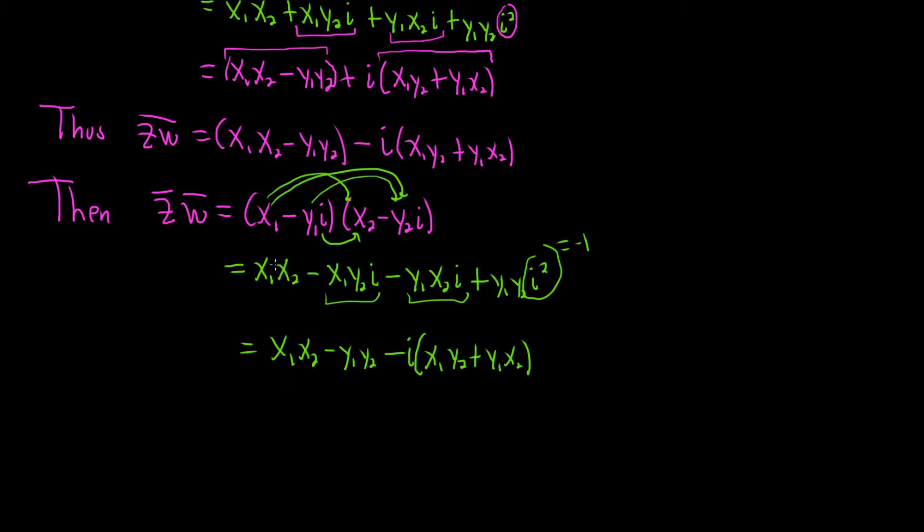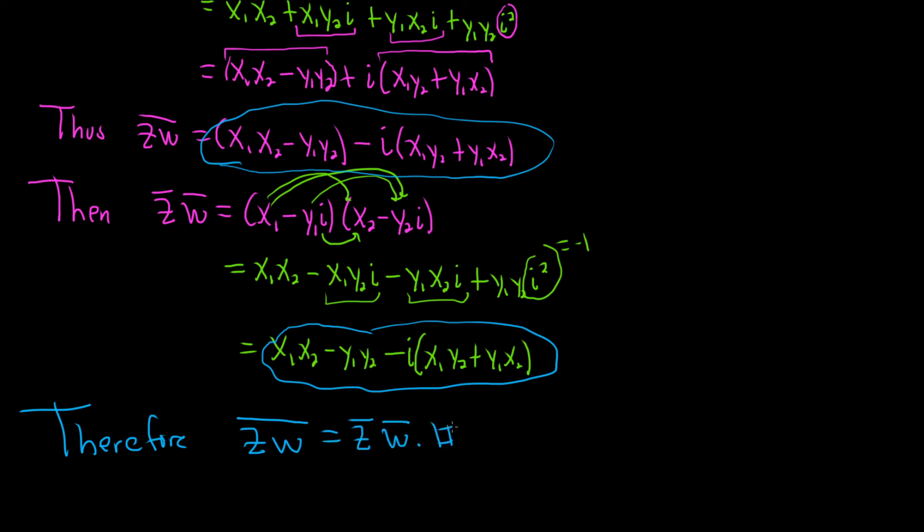And, oh, look at that. They're exactly the same. So, this here is exactly the same as this here. So, therefore, the conjugate of zw is equal to the conjugate of z times the conjugate of w. And that completes the proof. I hope this video has been helpful.